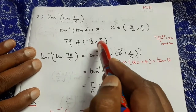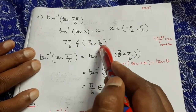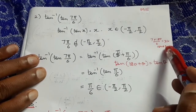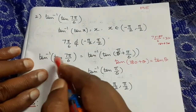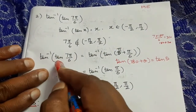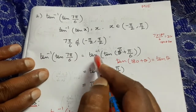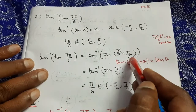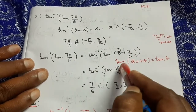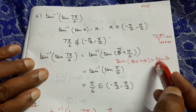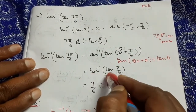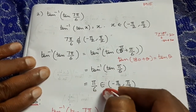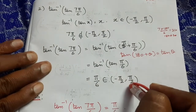210° = 180° + 30°. So tan⁻¹(tan(7π/6)) = tan⁻¹(tan(π + π/6)). Since tan(π + θ) = tan θ, this becomes tan⁻¹(tan(π/6)). Therefore the answer is π/6, which belongs to (−π/2, π/2).